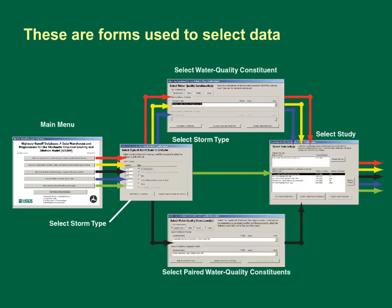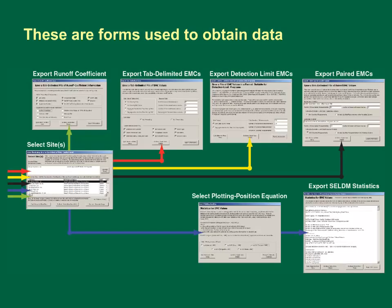These are the first set of forms used to obtain data or statistics. The colored arrows represent different flow paths for the selections on the main menu. The first step for every selection is to select the storm types. If we are pulling precipitation and runoff data, we go to the select study form after selecting the storm types. If we want water quality values, we go through the water quality selection form or the water quality pair form. In every case, we must select the desired study or studies on the dataset form. Once you select the study or studies of interest, you can select data from the site or sites of interest.